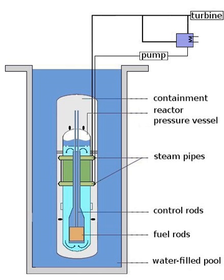For the design of the MTR, experiments were necessary, so a mock-up was built at ORNL to assess the hydraulic performances of the primary circuit and then to test its neutronic characteristics. This MTR mock-up, later called the Low Intensity Test Reactor, reached criticality on February 4, 1950, and was the world's first light water reactor.